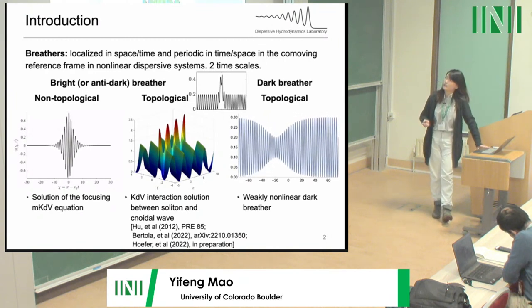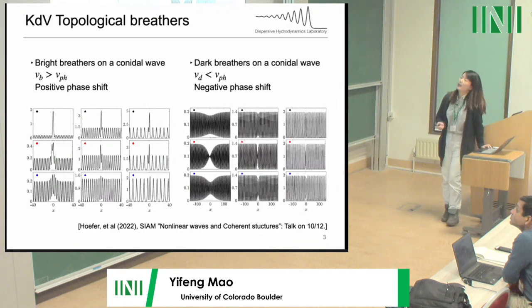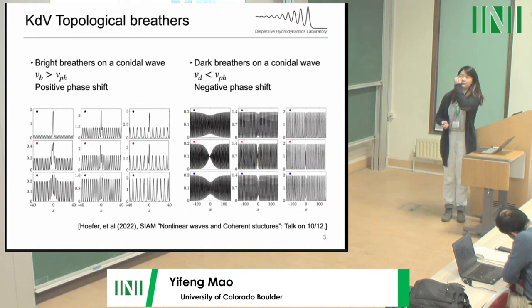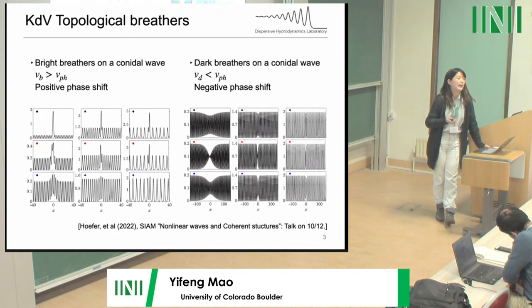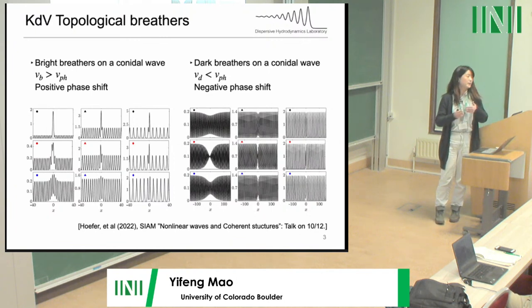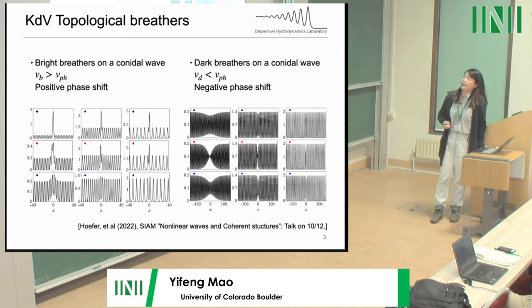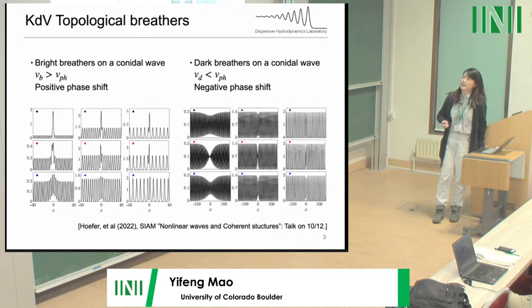I want to take a moment to emphasize the KdV interaction solution. In recent work by Hofer et al. and others, they found the interaction solutions of the KdV equation and their characterization. Here are some representative solutions. In the bright breather cases, those are solutions on different nonlinear dispersion curves — bright topological structures on a cnoidal wave background. The nonlinear dispersion relation suggests that the bright breather travels faster than the phase velocity of the carrier wave.